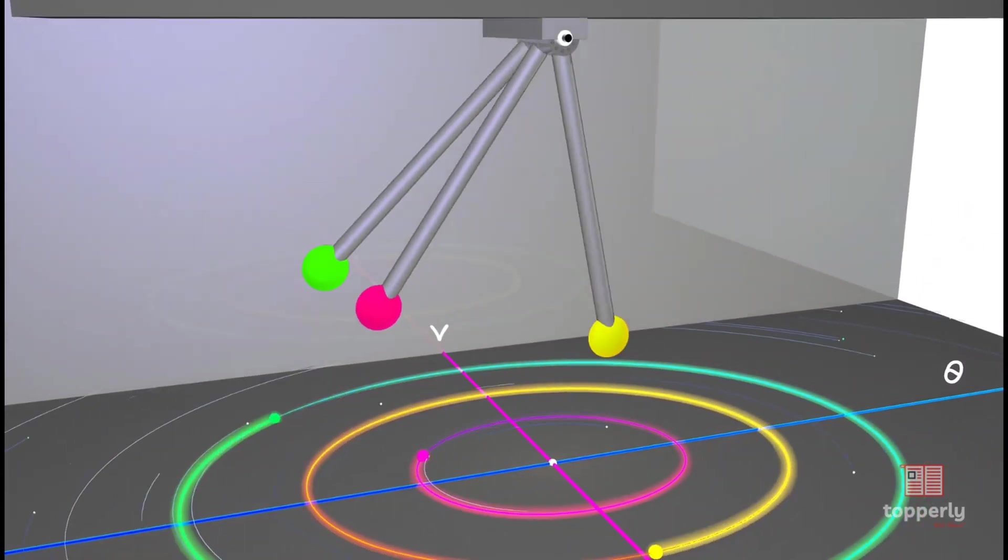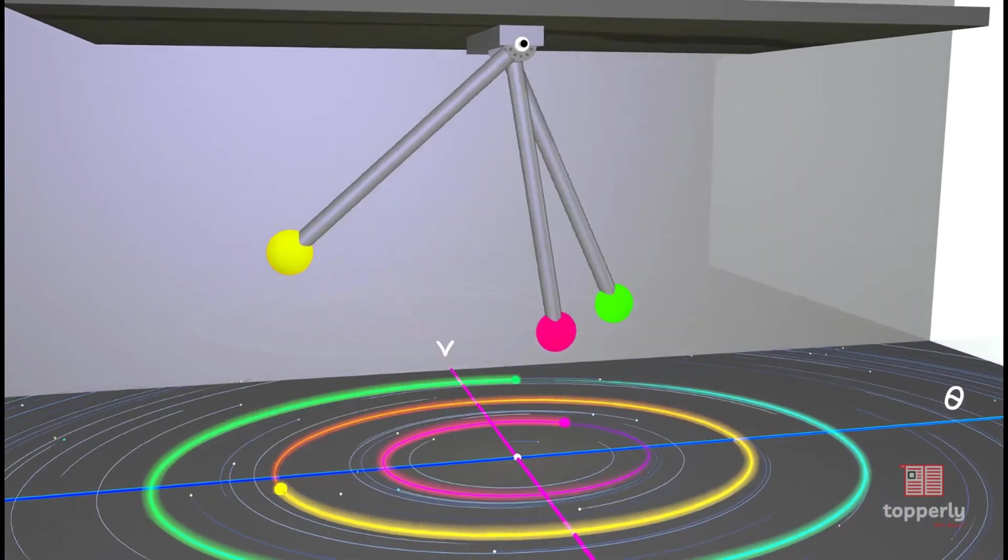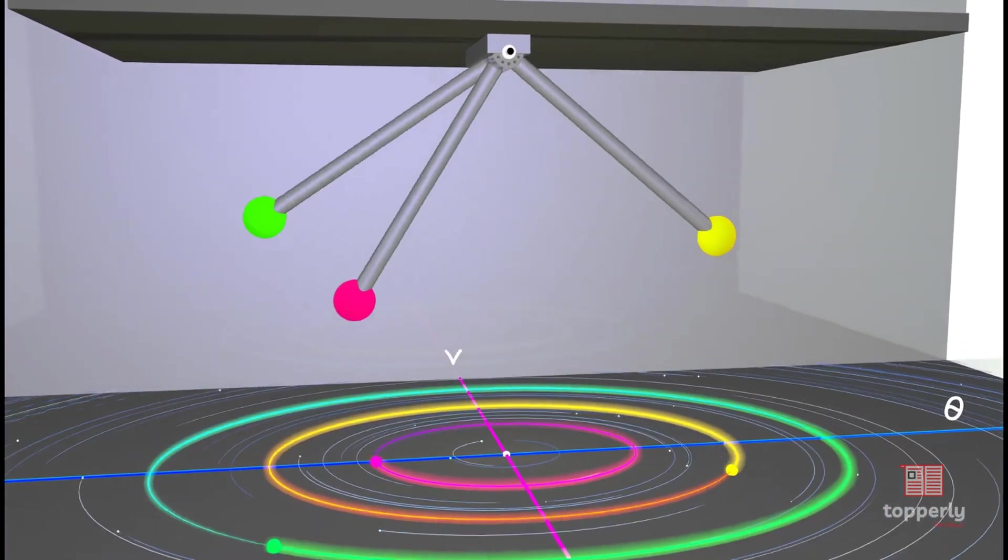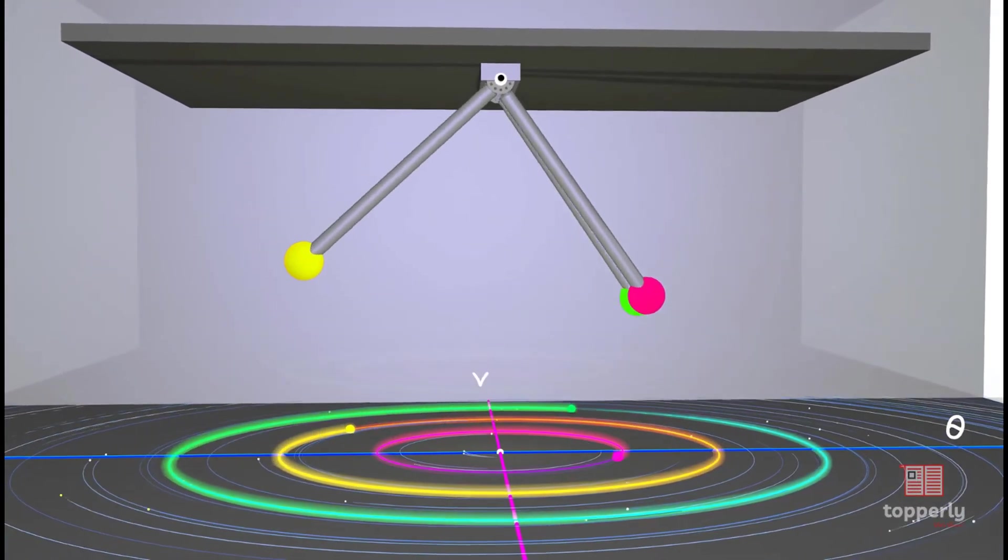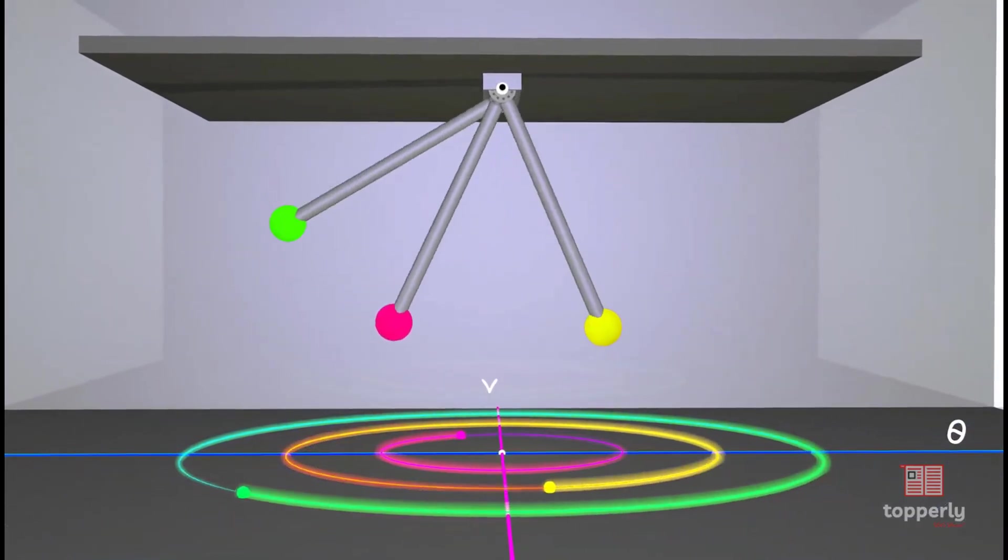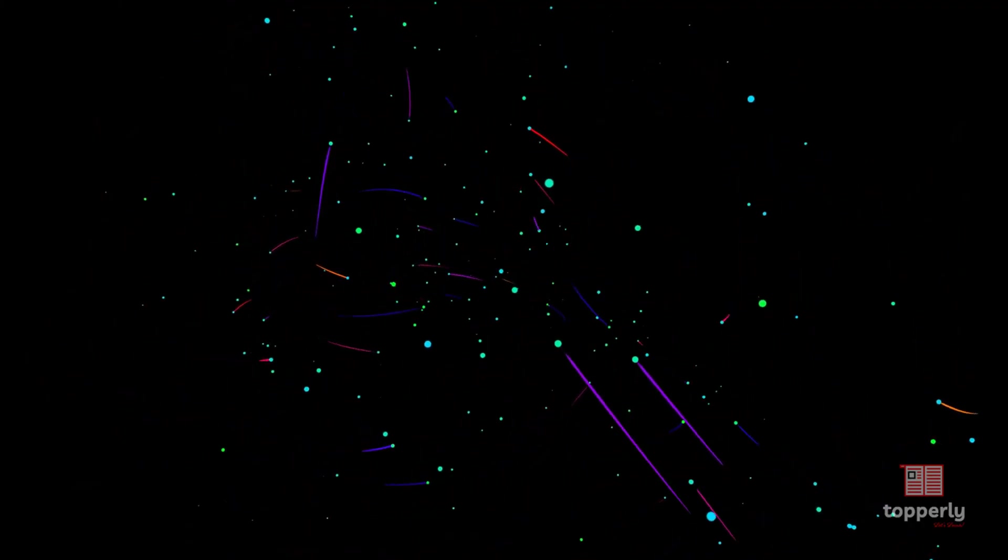An important thing to note is that the phase trajectories never cross each other in state space. This is because each point uniquely identifies the complete state of the system and that state has only one future. So, once you choose an initial state, the entire future of the system can be theoretically determined. Now, this same concept can be extended to higher dimensions.